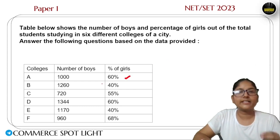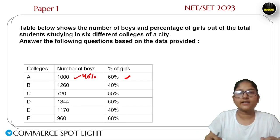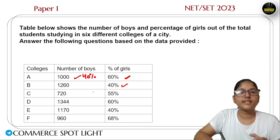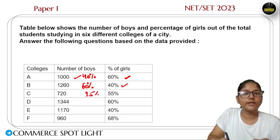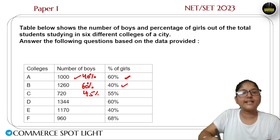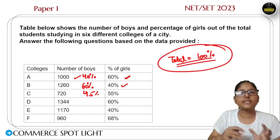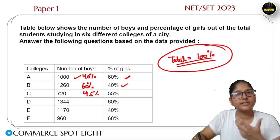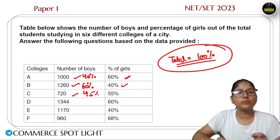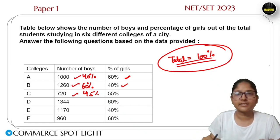Now one thing we have to understand: if in a college the percentage of girls is given as 60%, then boys are 40%. So if 40% value is 1000, then 60% girls correspond to that total. For example, 1260 with 55% girls means 45% boys, and 720 is another value. Because when we talk about total, it is 100%, so we can find out the number of girls and total students.